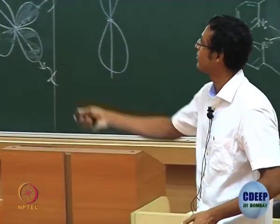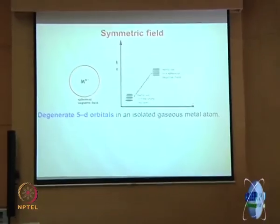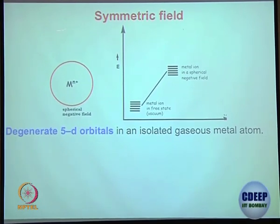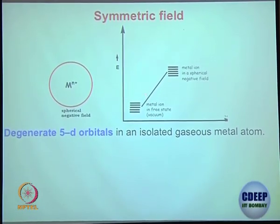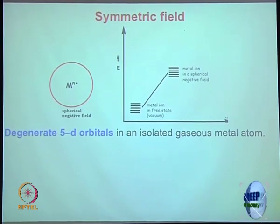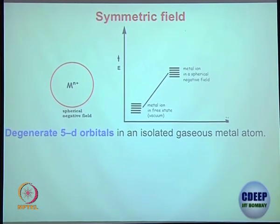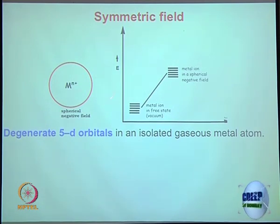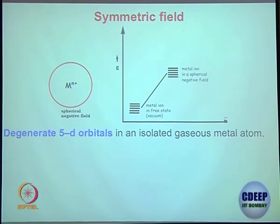If d-level energies are, for example, at some level, and you bring the ligand from an equal distance in all directions equally, then the energy of d orbitals will go up. Think of it as a spherical cricket ball — you are going to put pressure on the cricket ball from all directions and it is going to be destabilized. This is the ideal situation where all the ligands come from every direction equally.